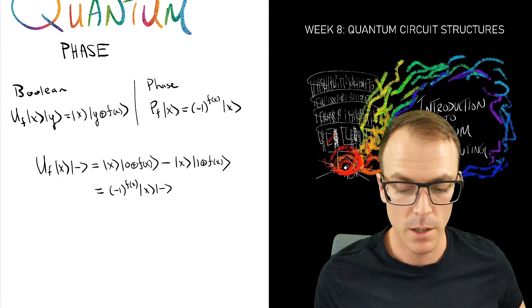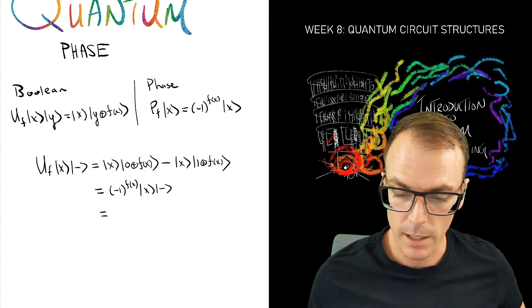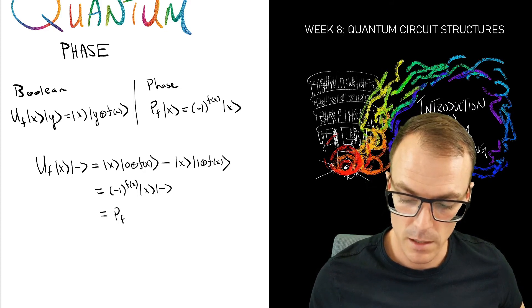So I'll get minus the minus state, and now we recognize this as the phase oracle.